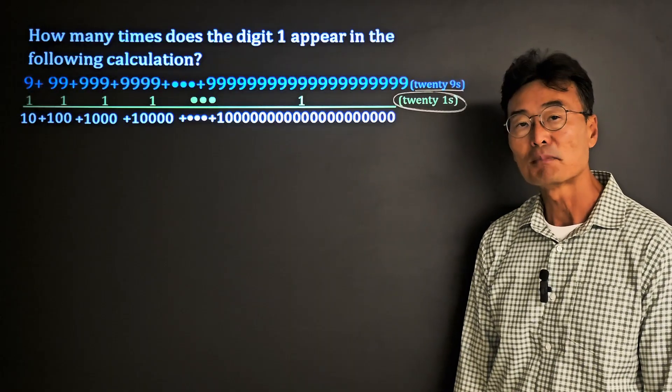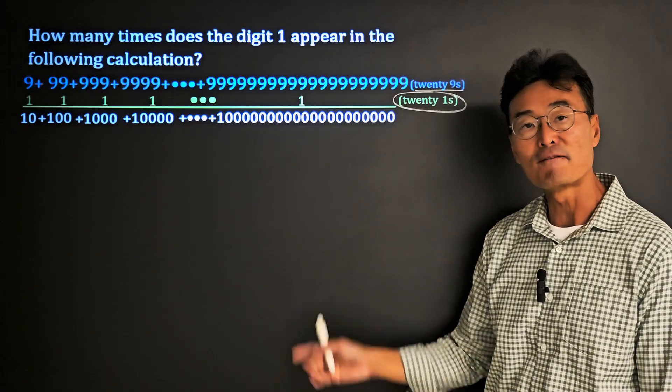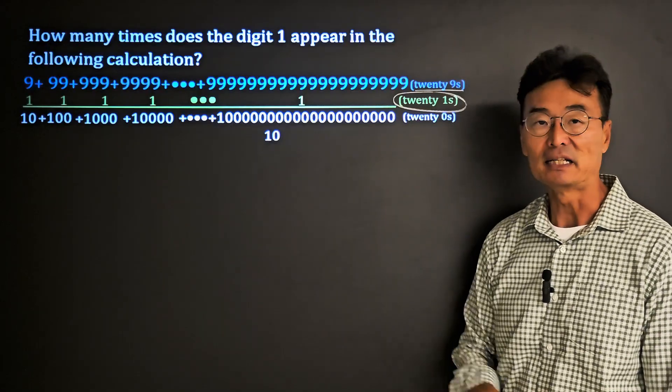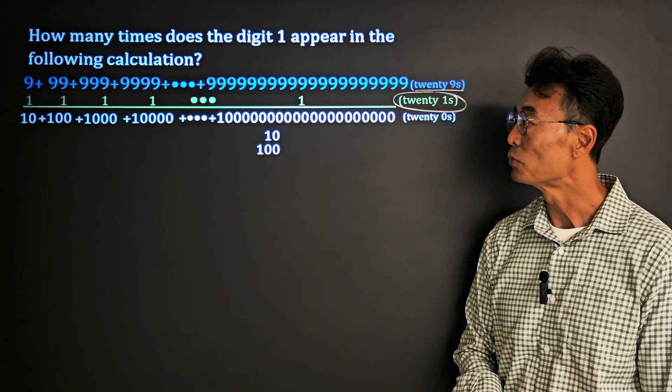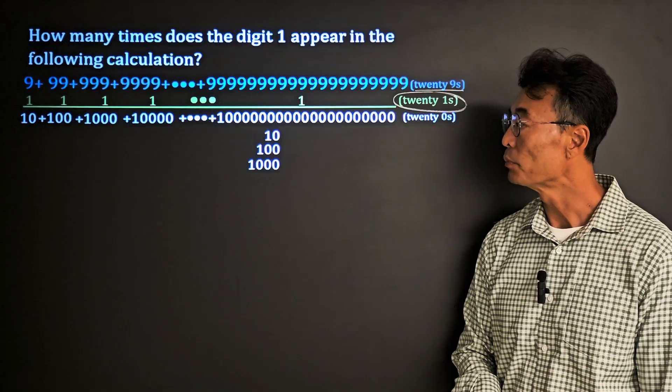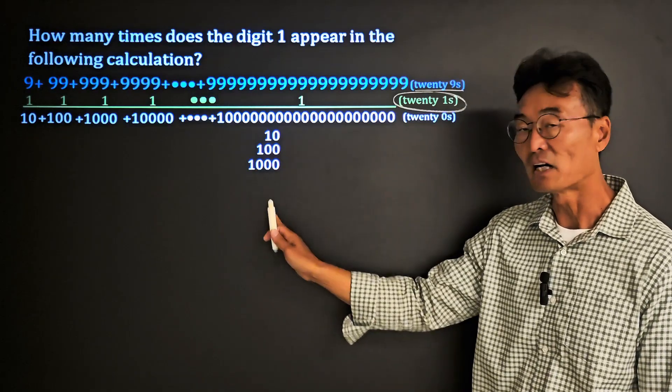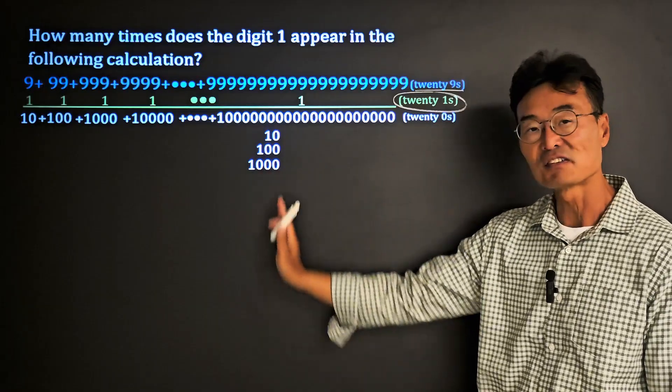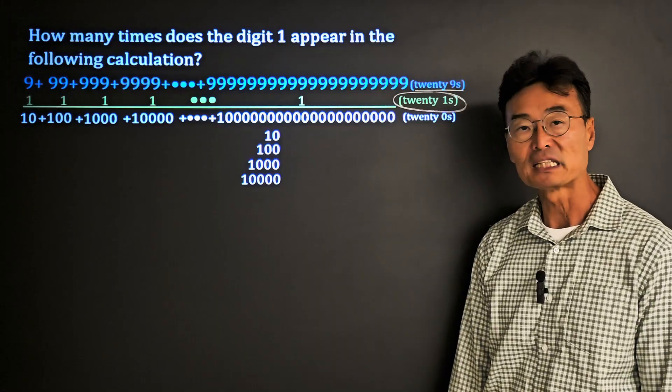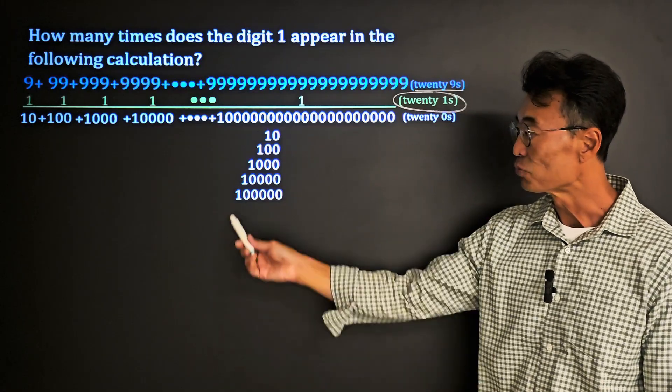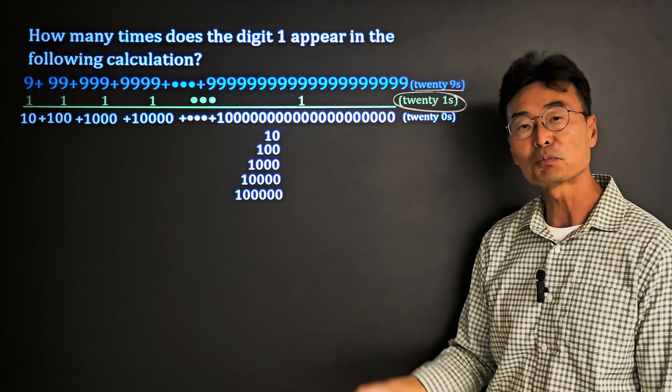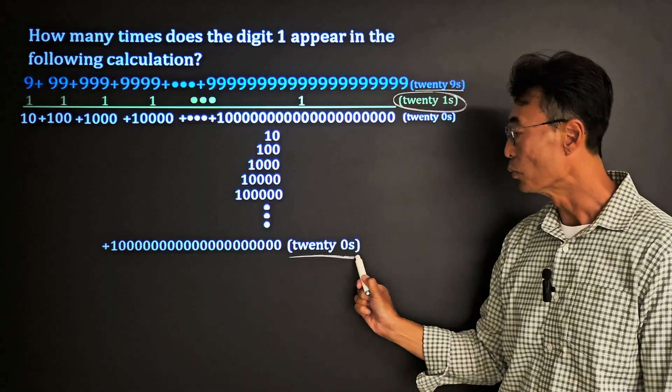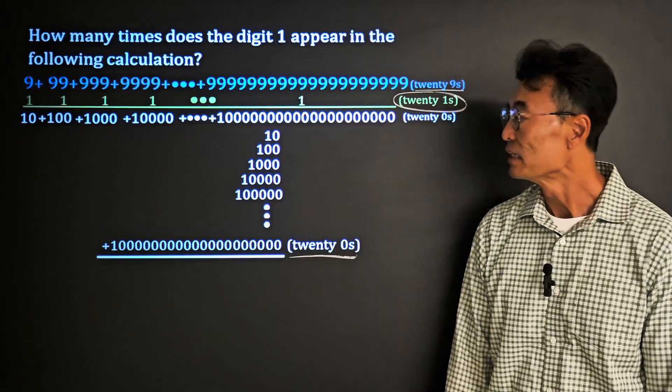Then we'll continue by writing these numbers down vertically where the first number will be 10, second number will be 100, the third number will be 1000. Notice how we line up the numbers so that we have the units digit along the same vertical line. Then the next number will be 10,000 and the next will be 100,000. I will continue the process until we have the very last number, the one with the 20 zeros.